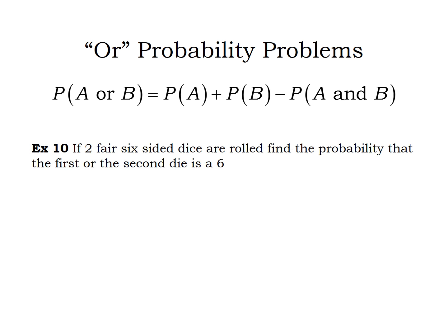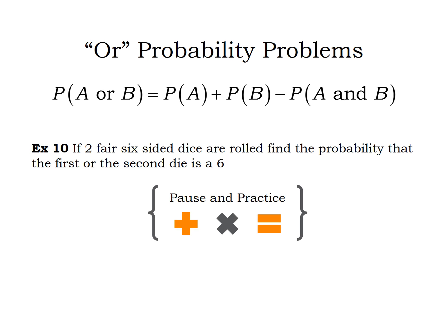This time I'm going to roll two fair six-sided dice, and I want the probability that either the first one is a six or the second one is a six — or both, remember, OR allows for both A and B to happen. Pause and practice: write out the formula first, then write out the probabilities and get your final answer.